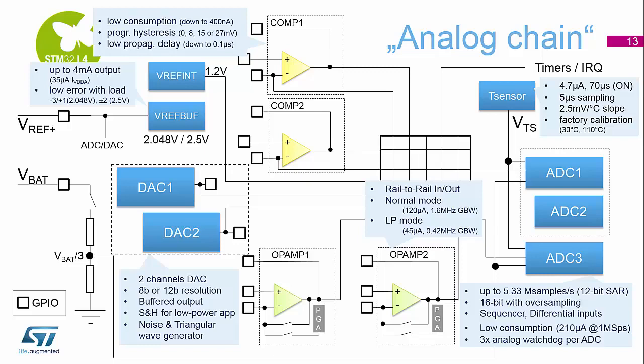Finally in the analog section, we have two comparators — comparator one and comparator two. Both have all their pins bonded to external GPIO pins so you can use them within your application as needed. They work in two modes: standard mode for performance and speed, or low power mode where you can get down to about 400 nanoamps.